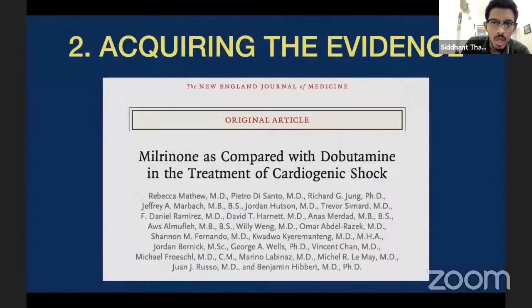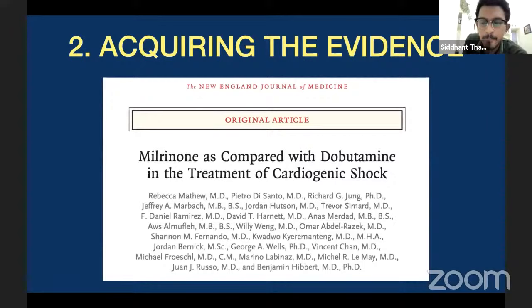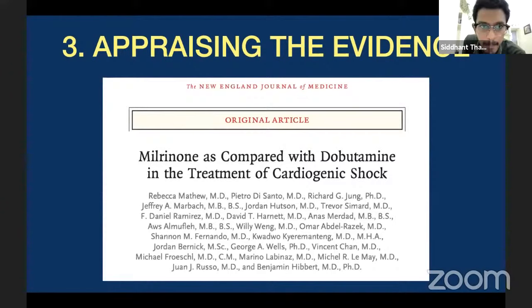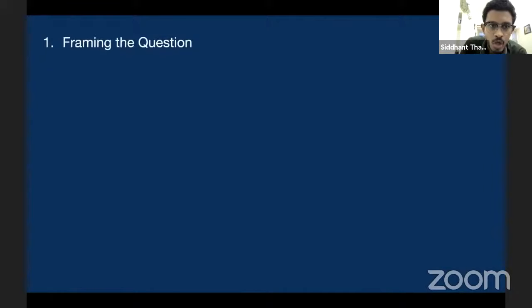A search of milrinone versus dobutamine in the treatment of cardiogenic shock yielded an article published in the New England Journal of Medicine — a randomized control trial which compared the efficacy of milrinone versus dobutamine in the treatment of cardiogenic shock. This is your second step: once you frame the question, you need to acquire the evidence. This paper will be our example to deal with the appraisal of whether or not to give milrinone or dobutamine.